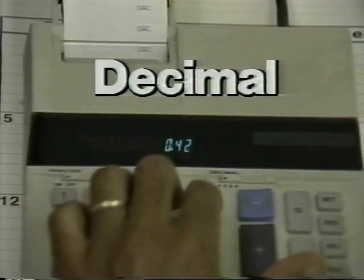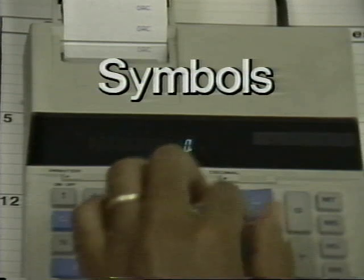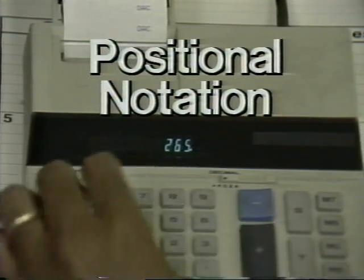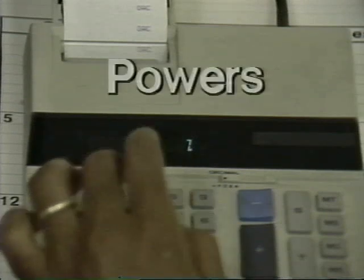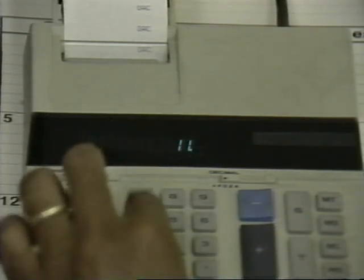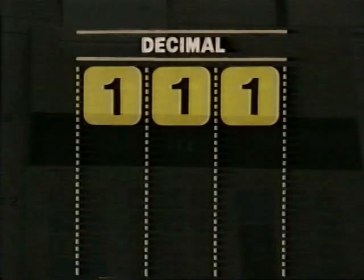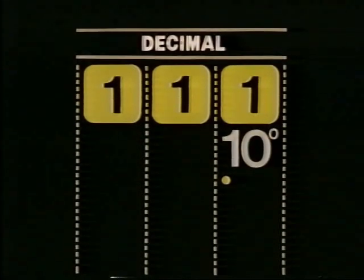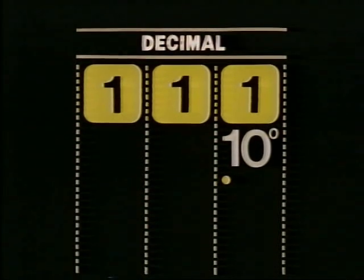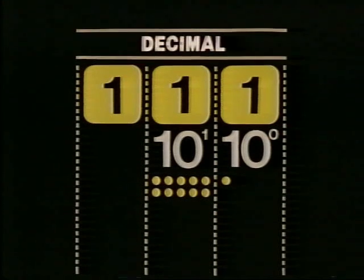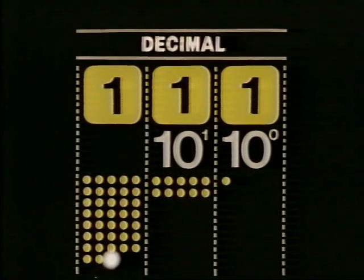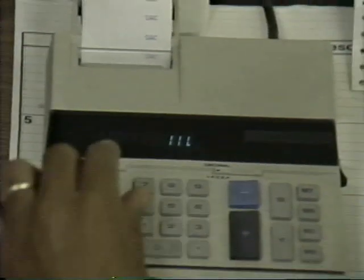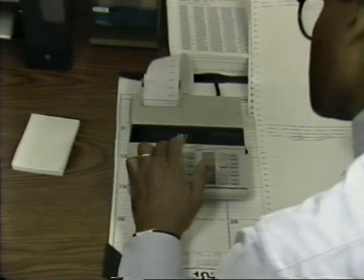Let's start with the decimal numbering system. It uses two techniques to express value: it uses symbols — ten of them — and it uses positional notation. The position of the symbol in the number determines the value. The positions are linked to the powers of ten. One in the first position means one — one times ten to the zero power. One in the second position means ten — one times ten to the first power. And one in the third position means one hundred — one times ten to the second power. You'll also see how binary and hexadecimal use these components.